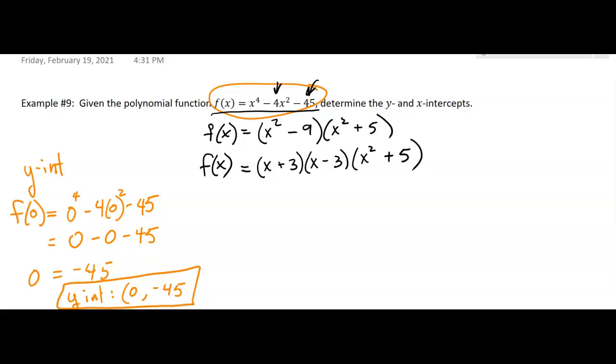All right, now what about the x-intercepts? Well, basically, we're setting that factored part to 0. So when does this equal 0? When x is negative 3. When does this equal 0? When x is 3. When is this going to equal 0? It's not, not over the real numbers. So that one's out.